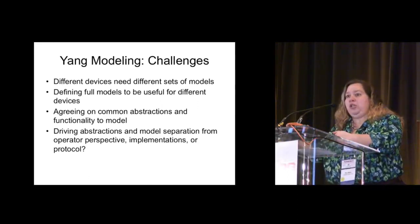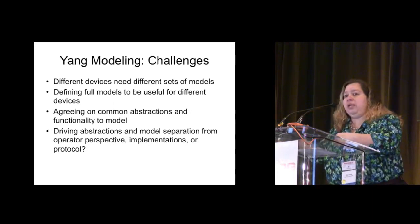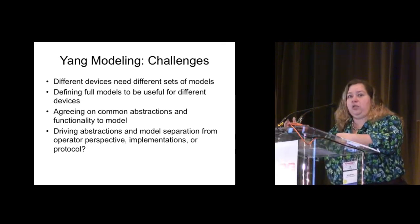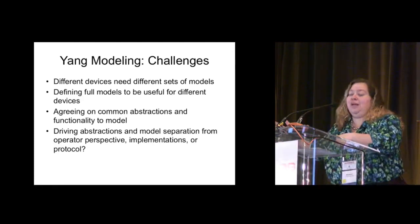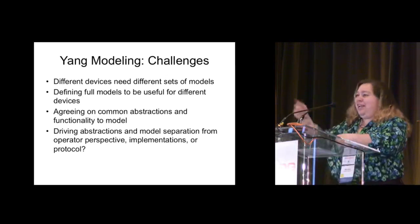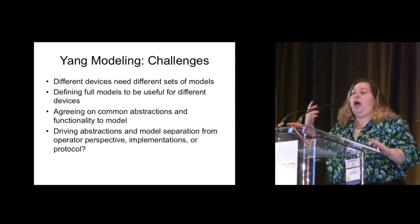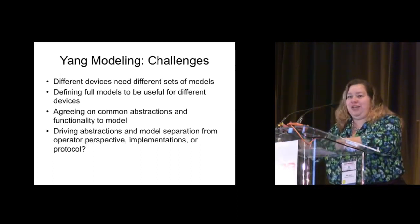How do we drive the right abstractions? There are at least three different views coming into play. One of them, which I think is really important, is the operator view: how are you planning on using the models? What are the abstractions? How do you view what needs to be there in Yang models and for the configuration? Another perspective is from the vendors — what are the implementations? And then there's a natural tendency in the IETF to do it by working group: here is a hammer, let me describe a Yang model for the hammer as opposed to how you're using the hammer. The internal organization of the IETF is completely the least way we want to structure the Yang models. We want to do them based on operator perspectives.